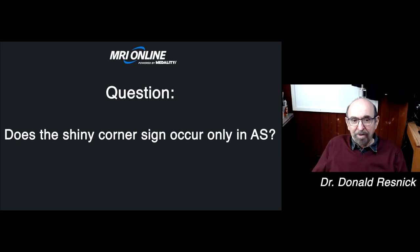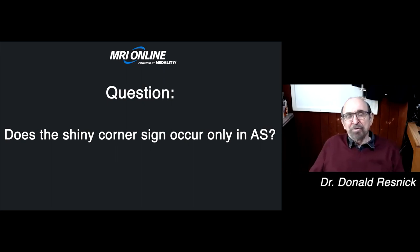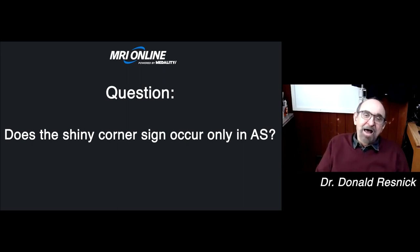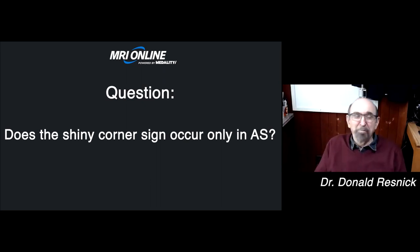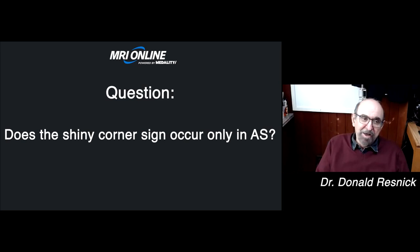Does the shiny corner sign occur only in AS? The answer is no, because it relates to an enthesitis. Enthesitis can be seen in psoriatic involvement of the discovertebral junction and reactive arthritis as well. In some cases of degenerative disc disease, the pattern of bone sclerosis in intervertebral osteochondrosis may involve a corner of the vertebral body. But it's a great sign, particularly when combined with squaring of the vertebral bodies and early syndesmophyte formation. When you have that combination, you'd be pretty sure you're dealing with ankylosing spondylitis.